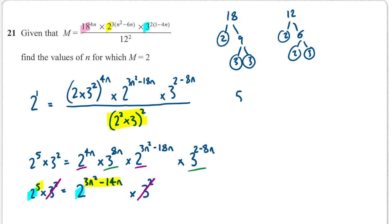So I can write over here that 5 must equal 3n squared minus 14n. I can set that equal to 0.